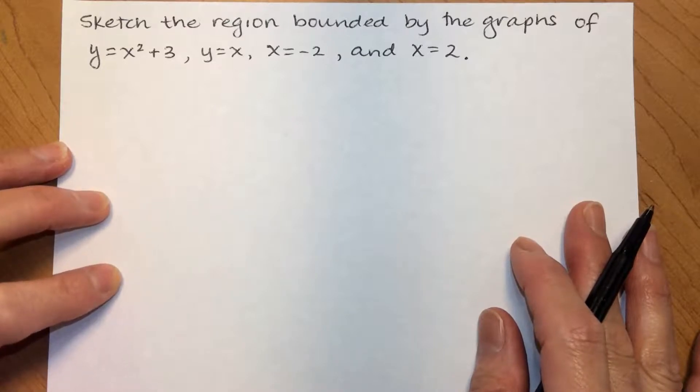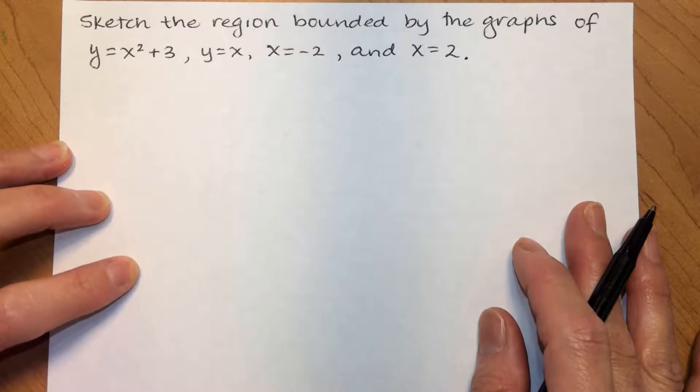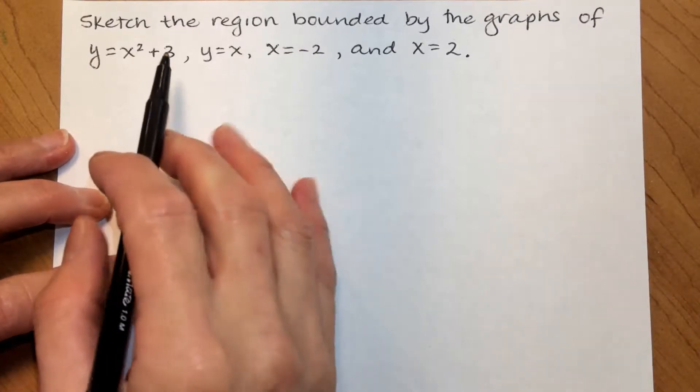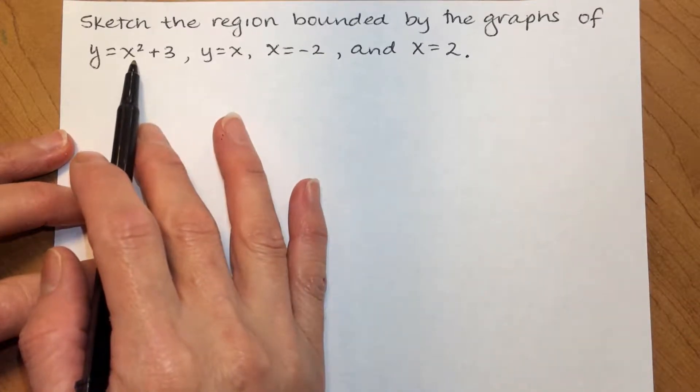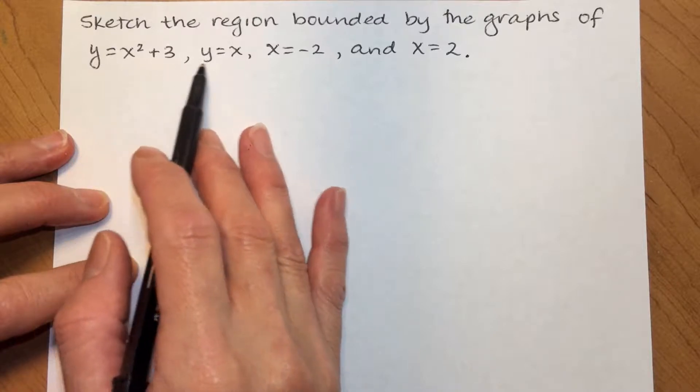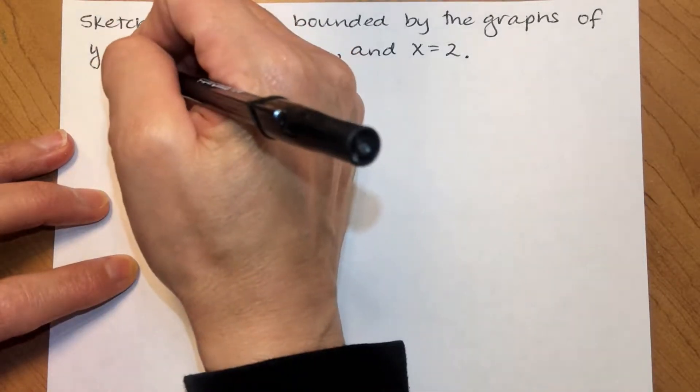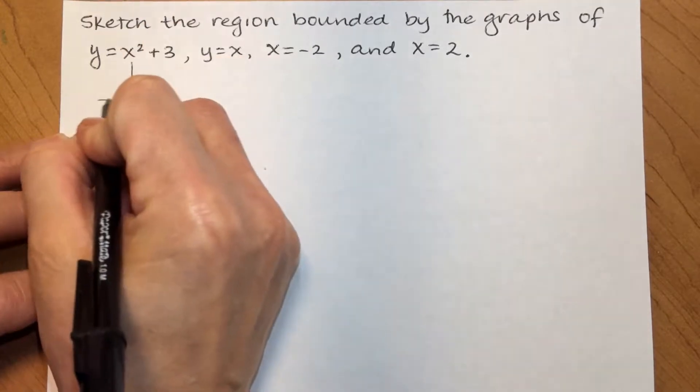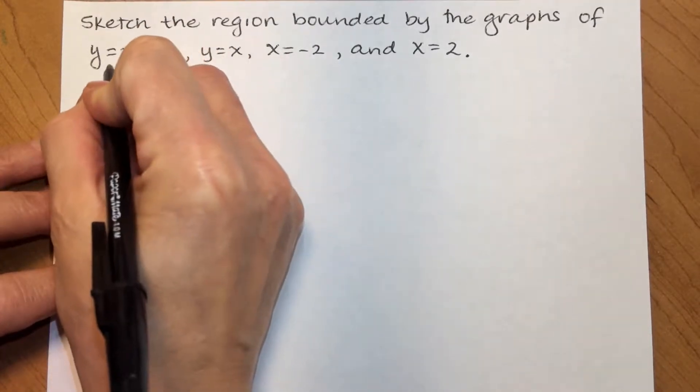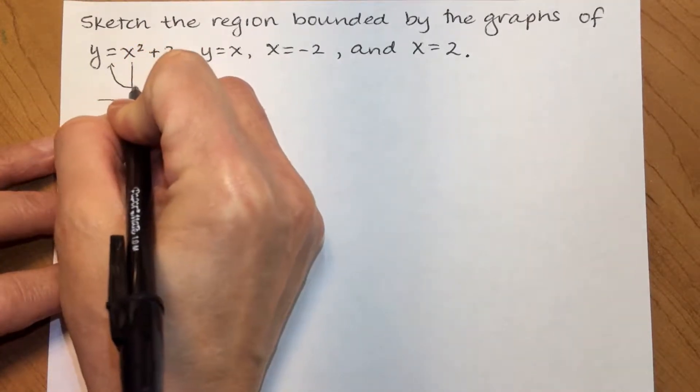So when I'm drawing the diagram, I think first I like to find where the curves intersect. So if you think about this parabola, which I'll just do a quick sketch of here, the parabola is shifted 3 units up. It looks like this.